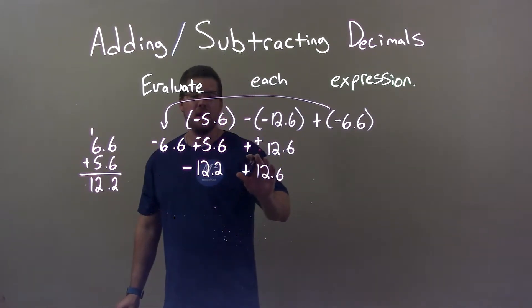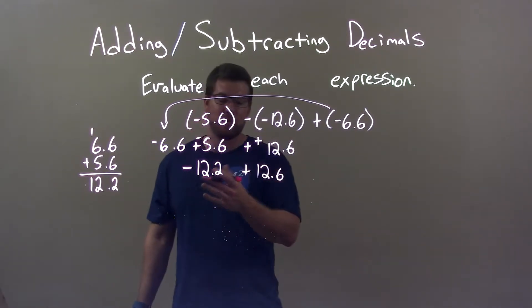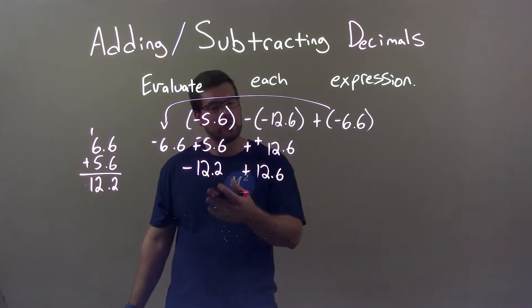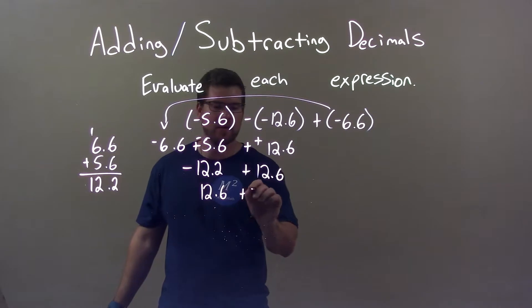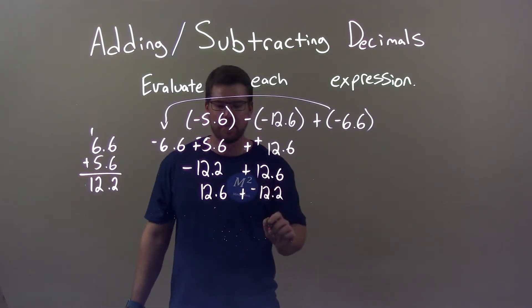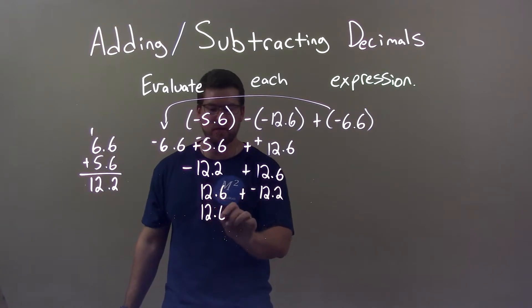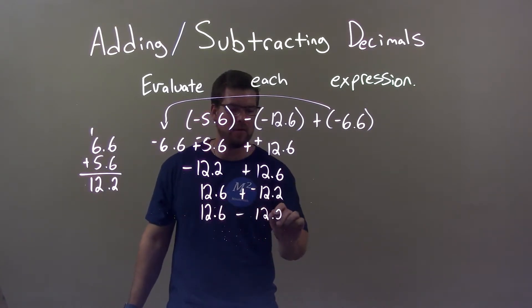Now, hopefully you can see this is the same thing as 12.6 minus 12.2, but if not, we know we can rearrange this to have 12.6 plus a negative 12.2. Then, adding a negative, same thing as subtracting. So we have 12.6 minus 12.2, okay?